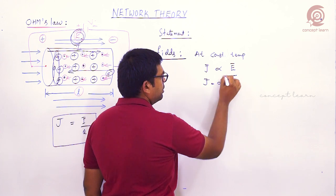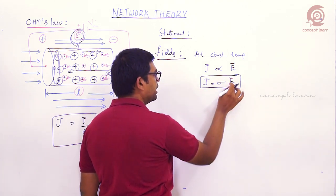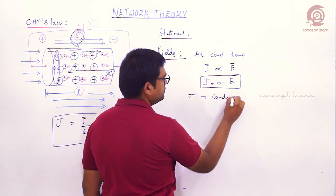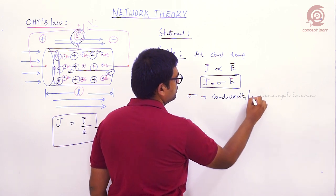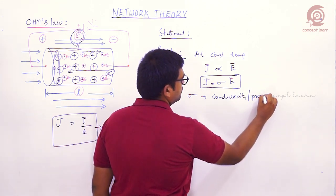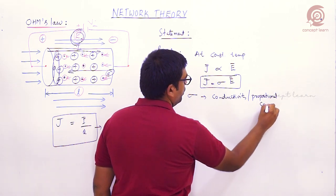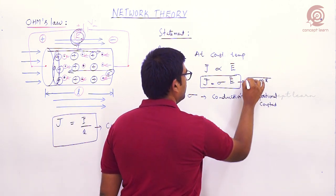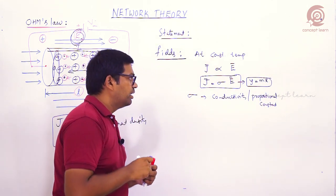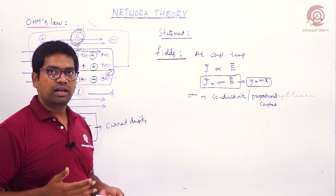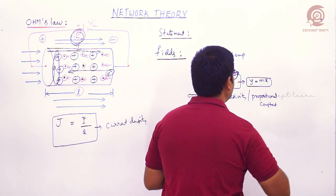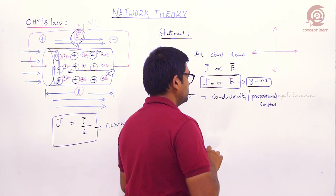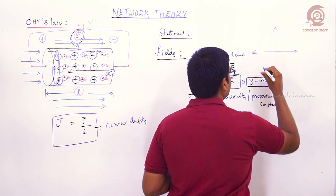Removing the proportionality sign and introducing the proportional constant sigma, we get J = σE, where σ is the conductivity of the material. This is Ohm's Law in field theory form. The relation J = σE is similar to y = mx — a straight line passing through the origin when plotting current density vs. electric field.